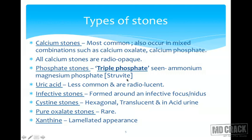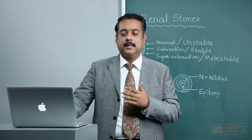The third type is uric acid stones, which are less common and radiolucent. Next are infective stones, typically formed around an infective nidus, with various microorganisms detectable on stone analysis. Cysteine stones are hexagonal in crystal formation, translucent, and usually formed in acidic urine - important for MCQs. Pure oxalate stones are rare, and xanthine stones show a lamellated appearance on cross-section analysis.